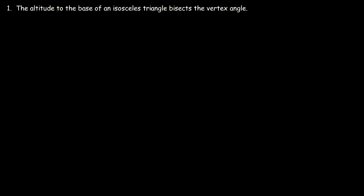In this tutorial we're going to go over missing diagrams. Here's an example problem: the altitude to the base of an isosceles triangle bisects the vertex angle. We need to prove it using a two-column proof, but in this example we're not given the diagram — we're missing the diagram — so we have to draw it ourselves.